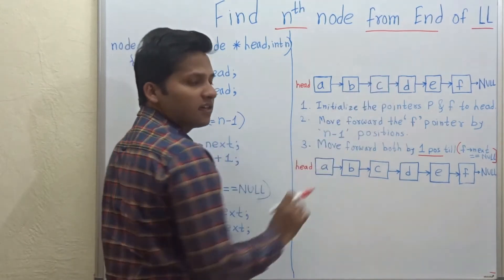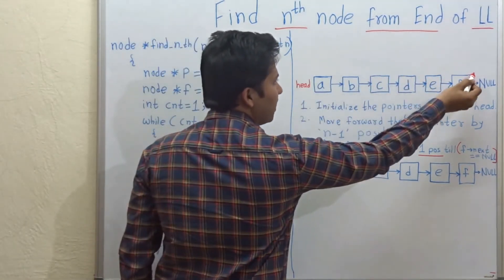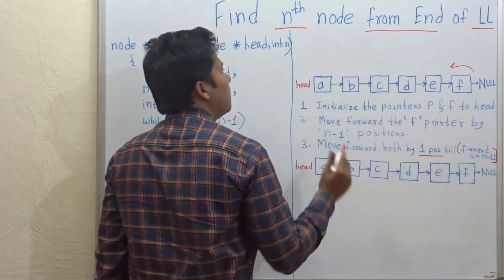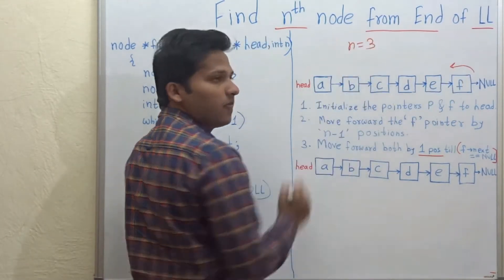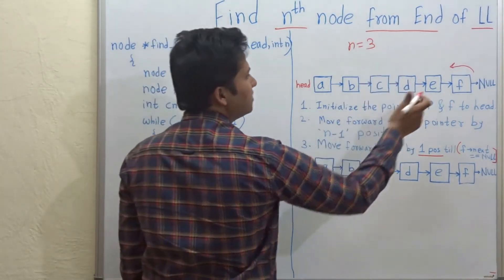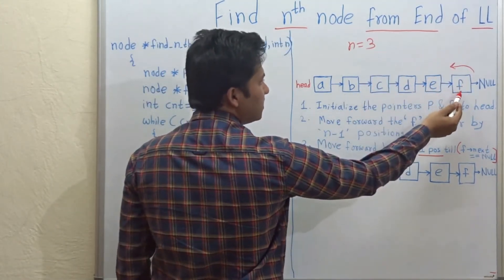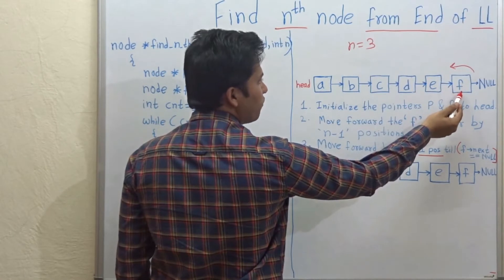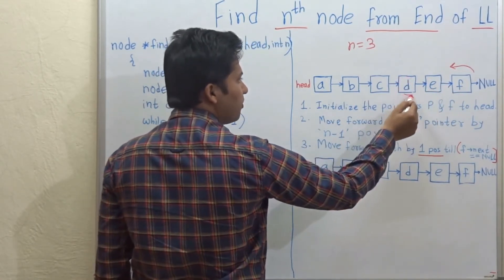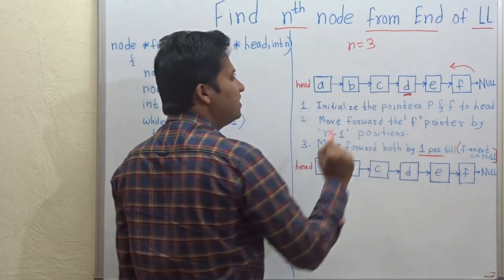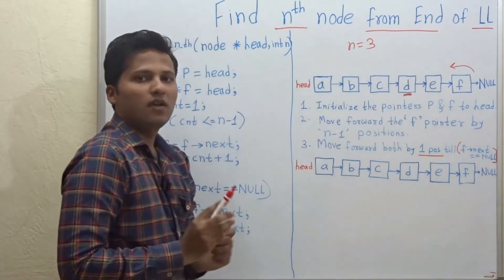This is the linked list and we want to find out the nth node from the end. Suppose n is equal to 3. Then in this linked list, the third node from the end — this is the first node from the end, second node, and this is the third node from the end. So d is the third node from the end of the linked list.